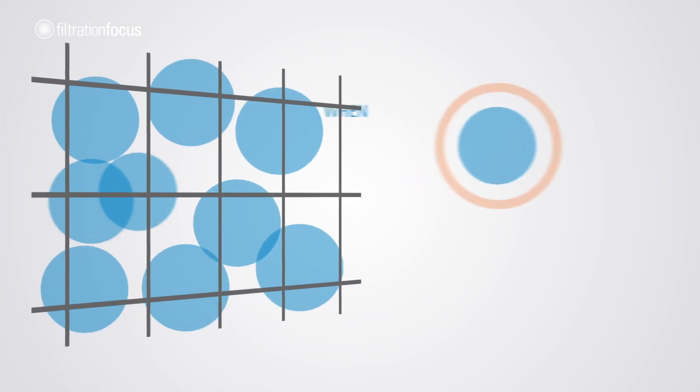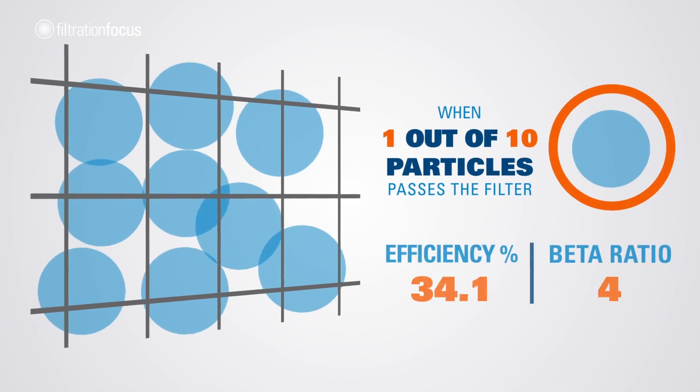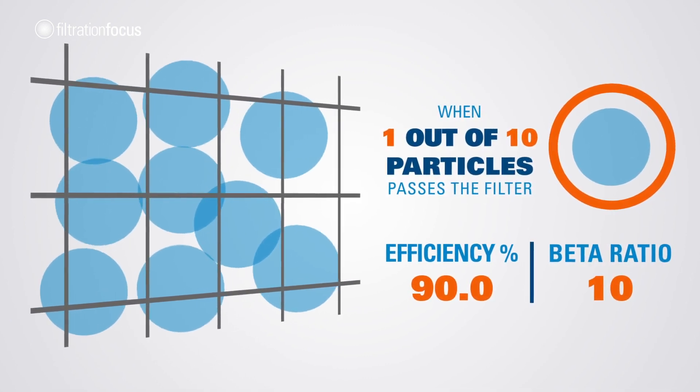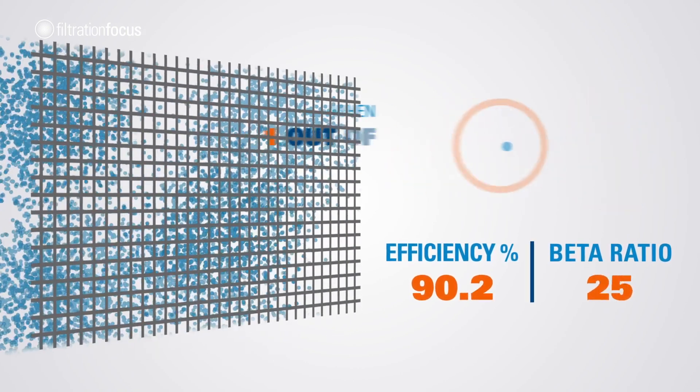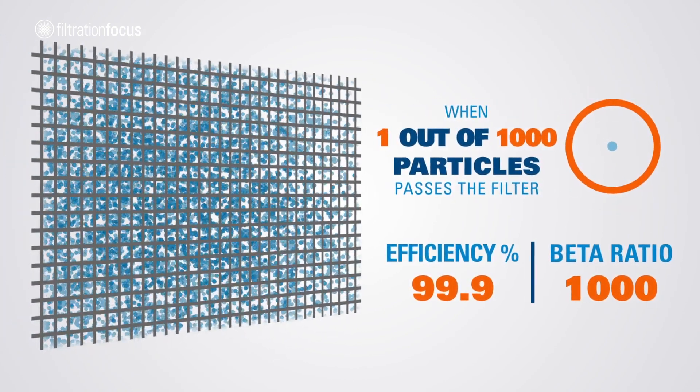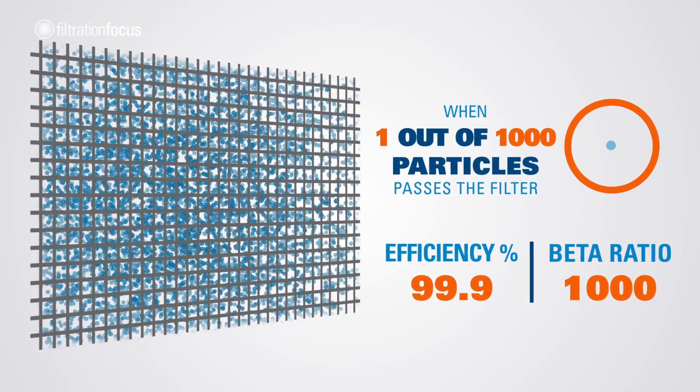For example, at a specified micron size, when 1 out of 10 particles passes the filter, it has an efficiency of 90% or a beta ratio of 10. When 1 out of 1000 particles passes the filter, it has an efficiency of 99.9% or a beta ratio of 1000.